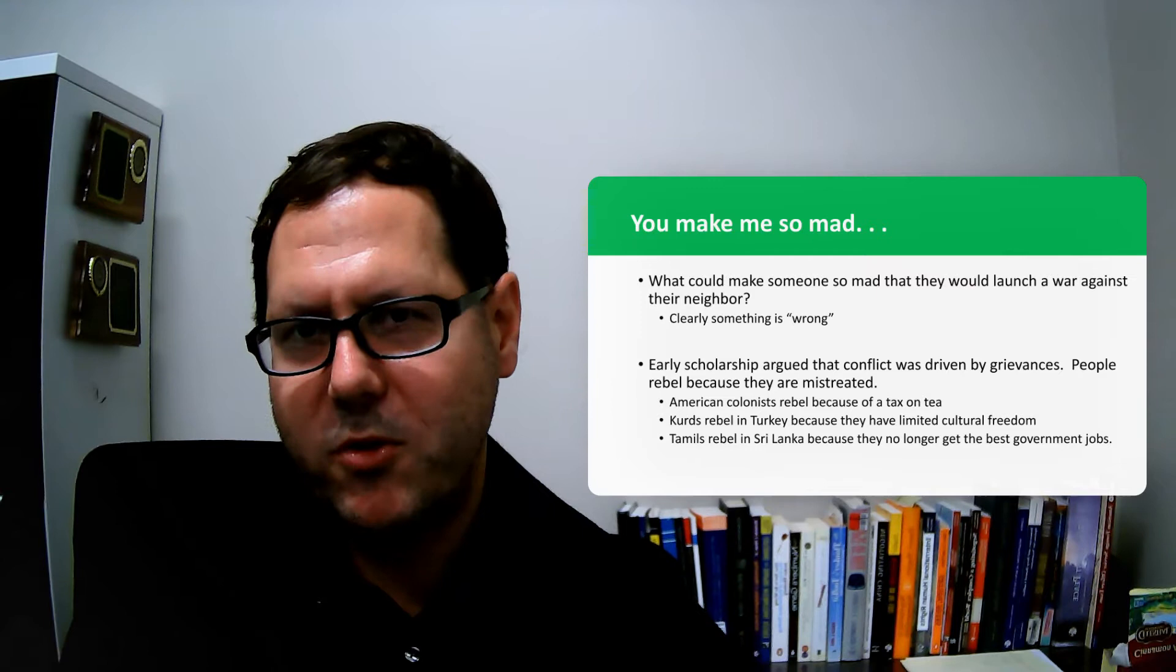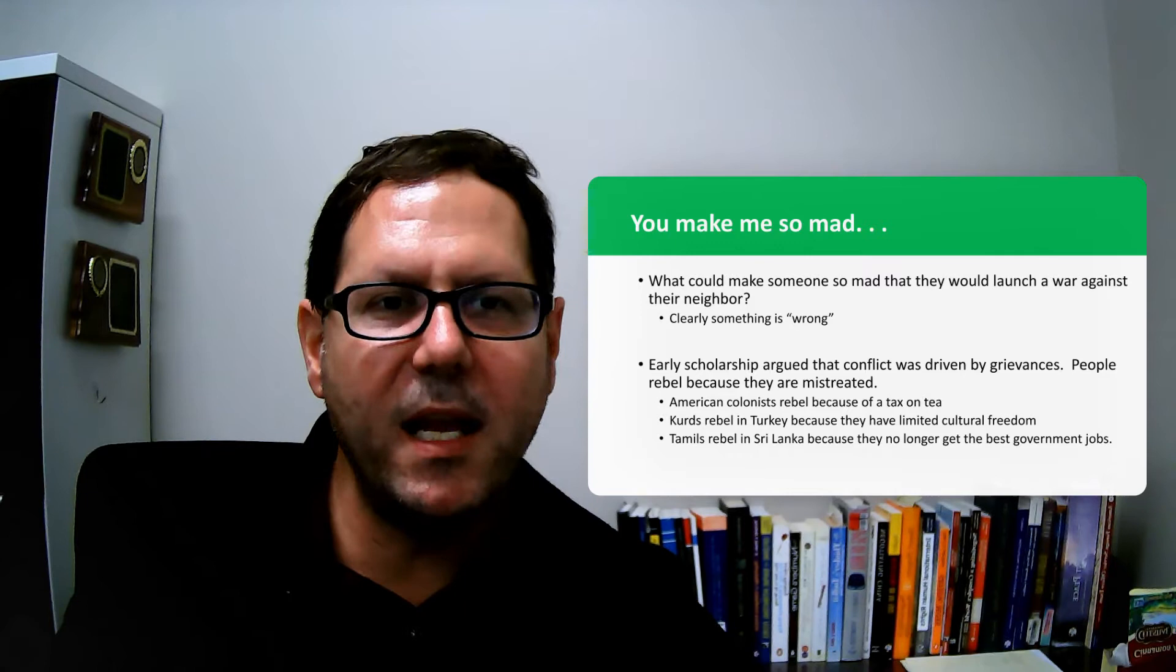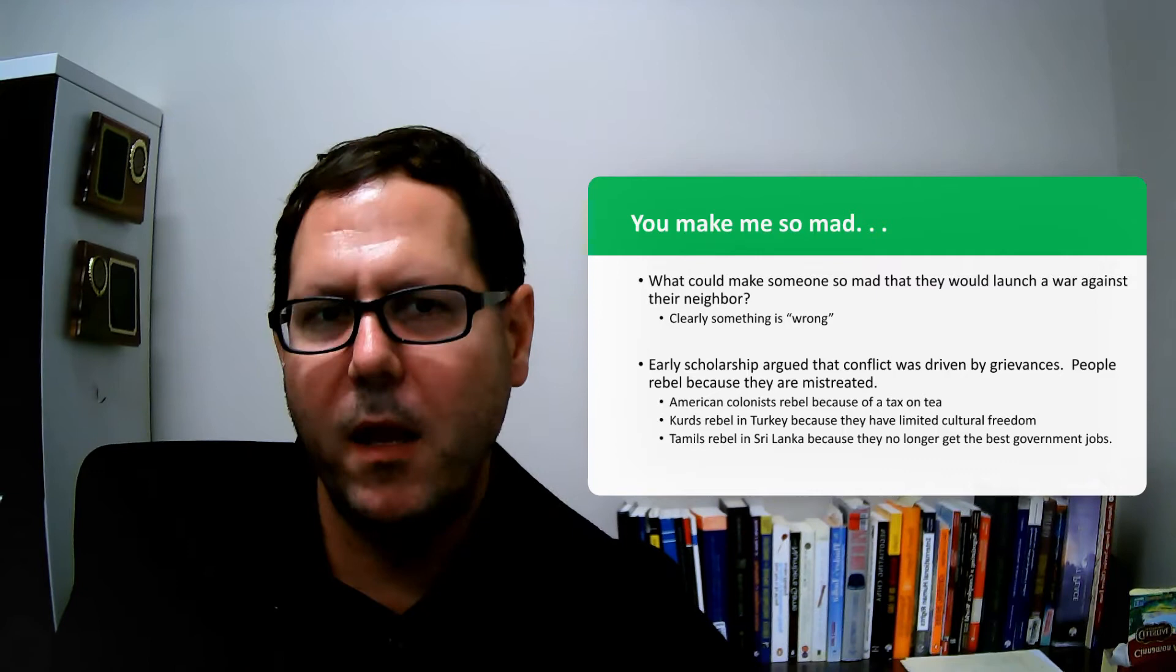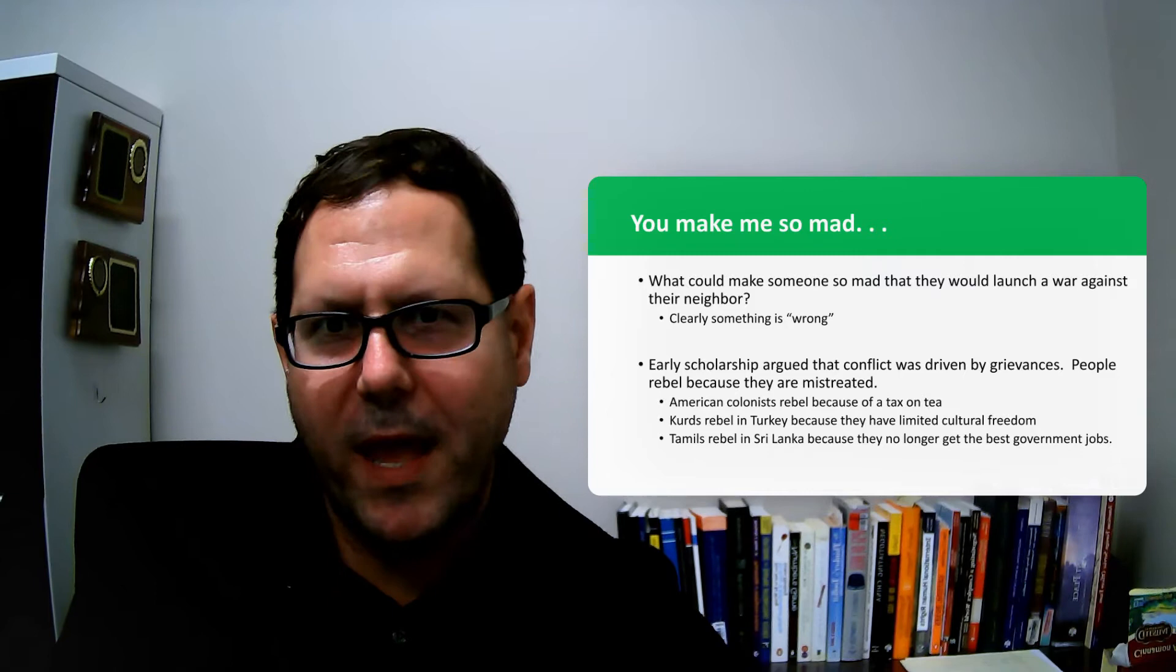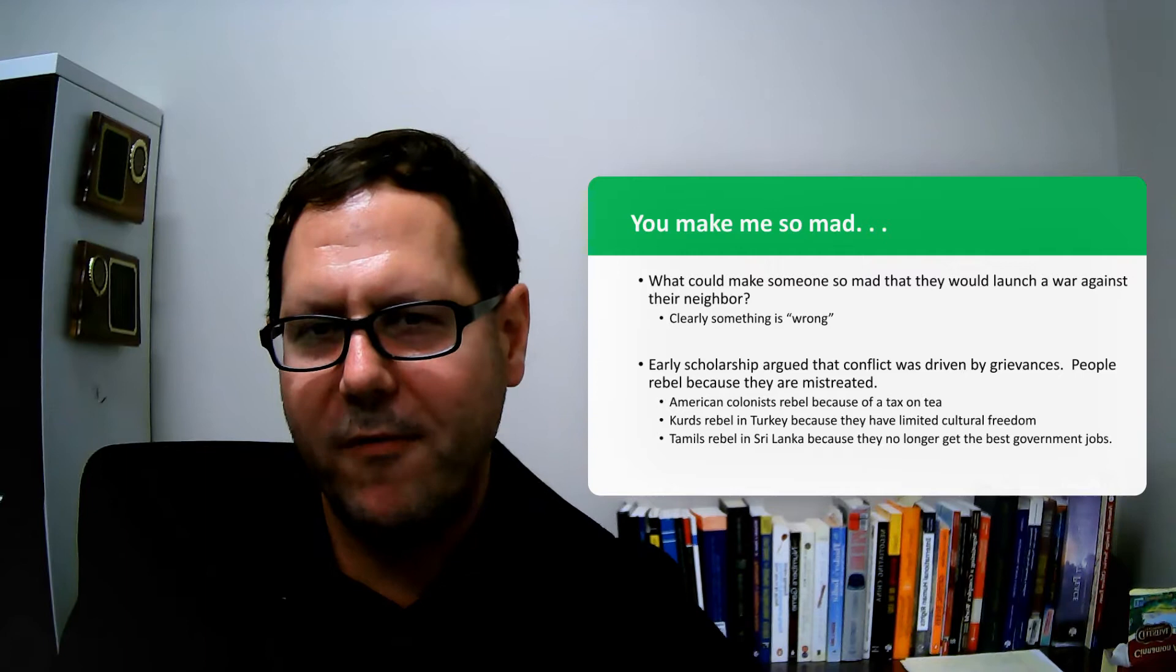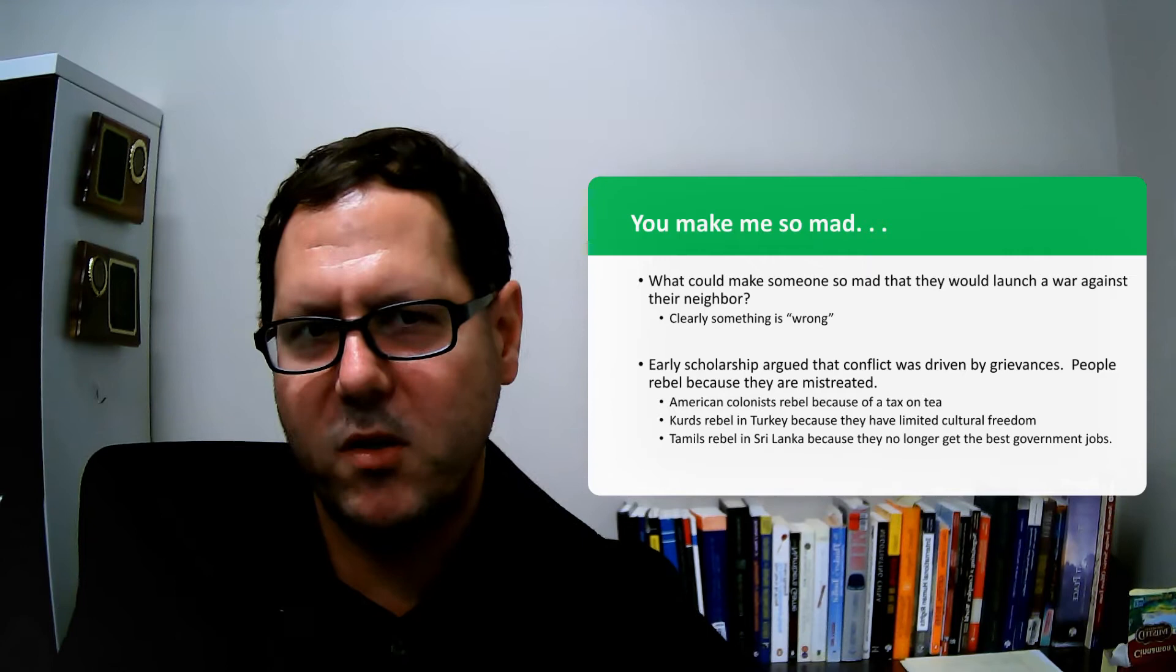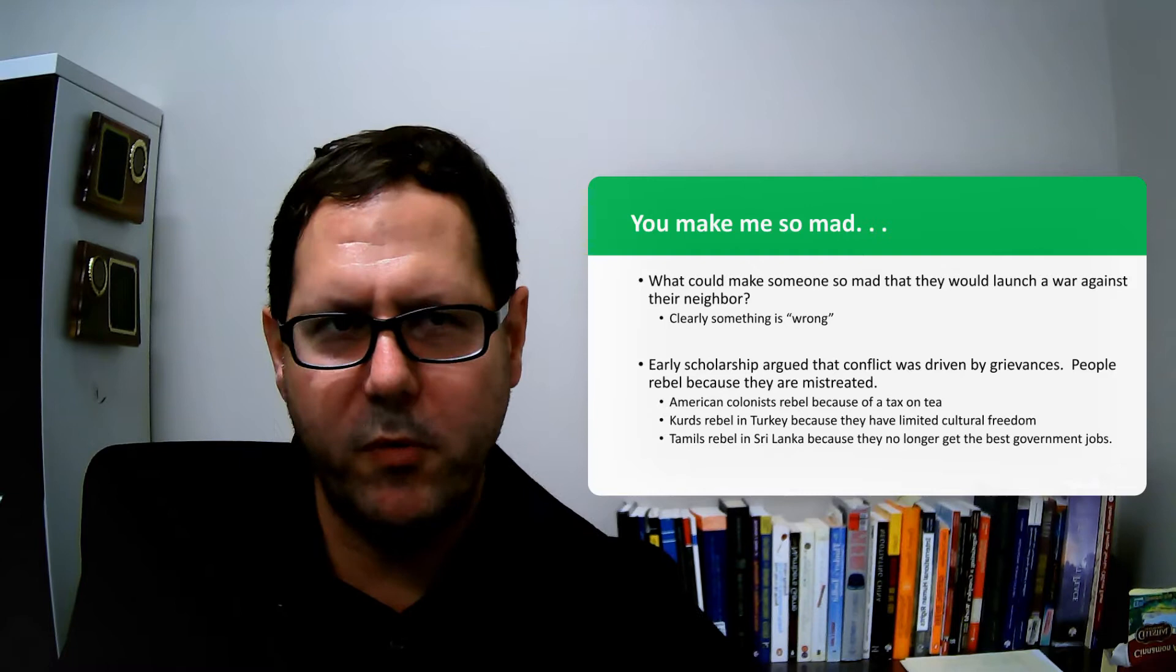Early scholarship trying to understand conflict both at the individual and larger level of states or ethnic groups pointed to this idea of grievances—that people are rebelling because they're reacting to being mistreated. There are intuitive stories we can tell around that. Those of us in the United States grew up with the story that American colonists rebelled because of oppressive taxes levied by England, troops being quartered in homes—things that were such an affront to American liberty that there was no recourse other than to respond with violence, throwing tea in the harbor and trying to boot the British out of Boston.